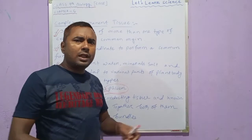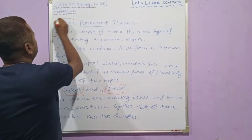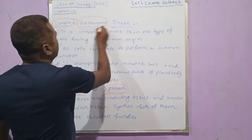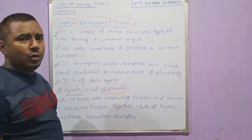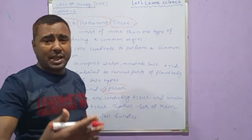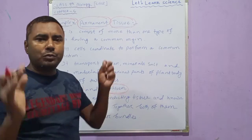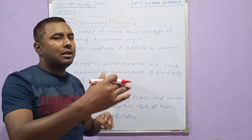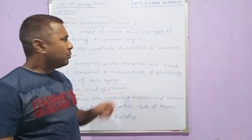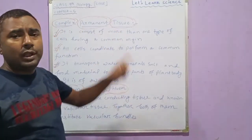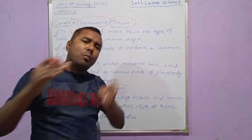So let us talk today about the complex permanent tissue. From the name itself — complex — while reading about simple permanent tissue we come to know that simple permanent tissue is made up of a single type of cell. But in the case of complex permanent tissue, they are made up of different types of cells.